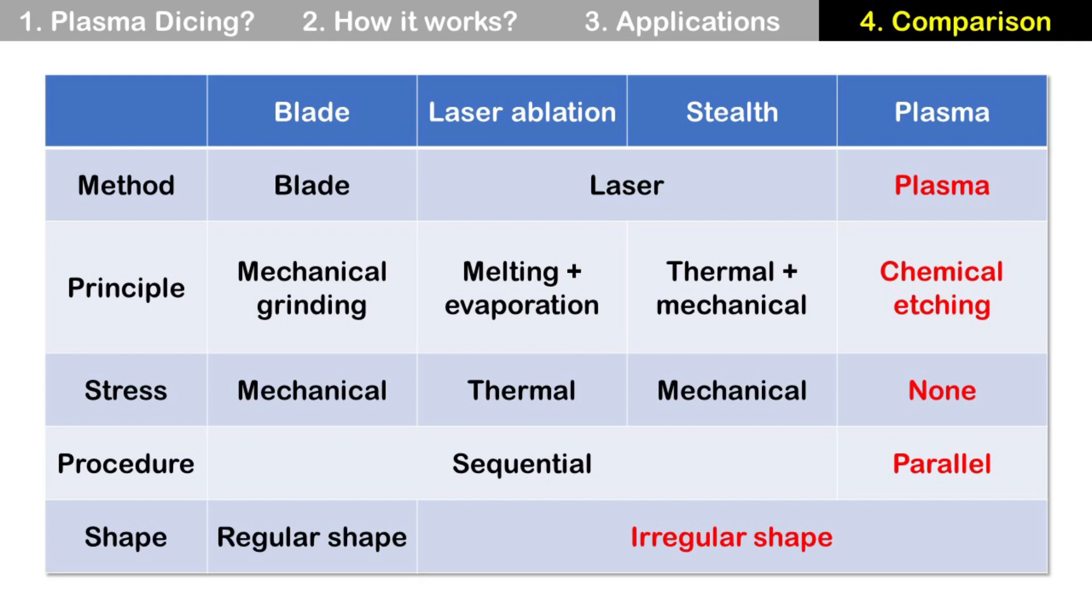Other dicing technologies need to travel all scribe lines, and it takes lots of time, especially for small dies with more scribe lines. But plasma dicing etches all these scribe lines at the same time, meaning in parallel. So it can dice more quickly than other technologies.